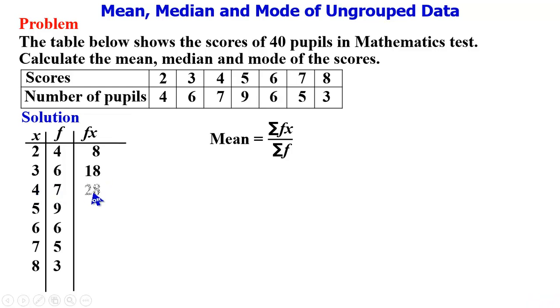4 times 7 gives 28, 5 times 9 gives 45, 6 times 6 gives 36, 7 times 5 gives 35, and 8 times 3 gives 24. What we'll do next is to sum up the frequency column and the fx column.